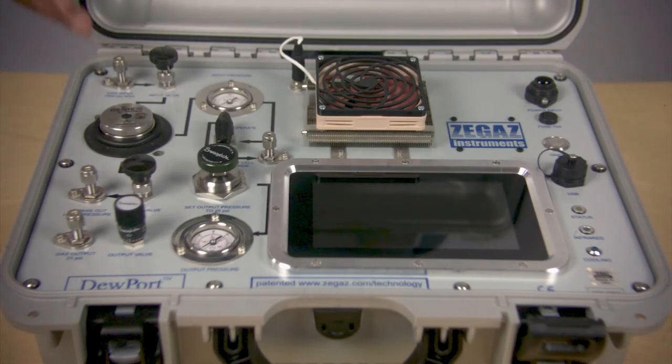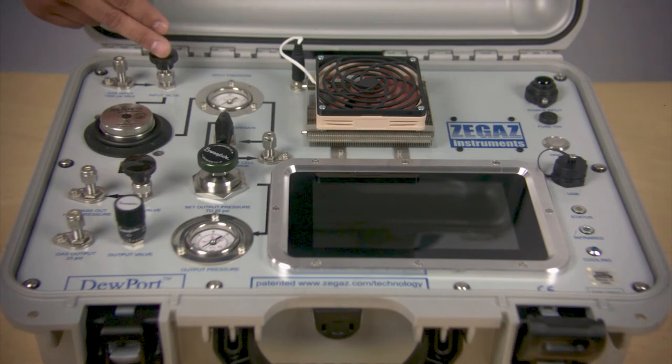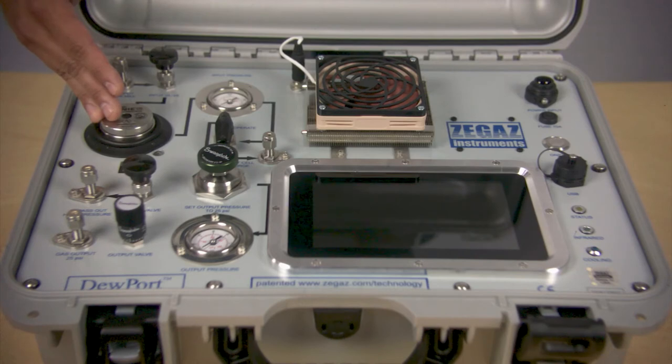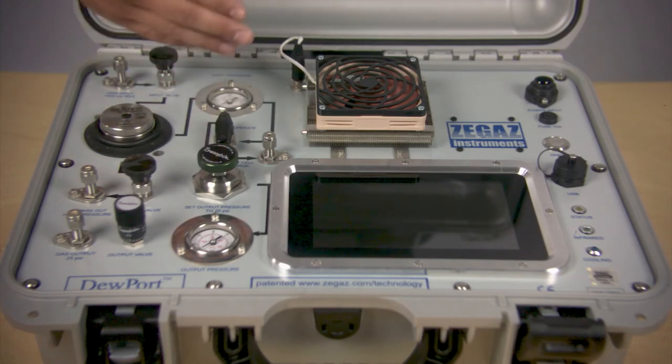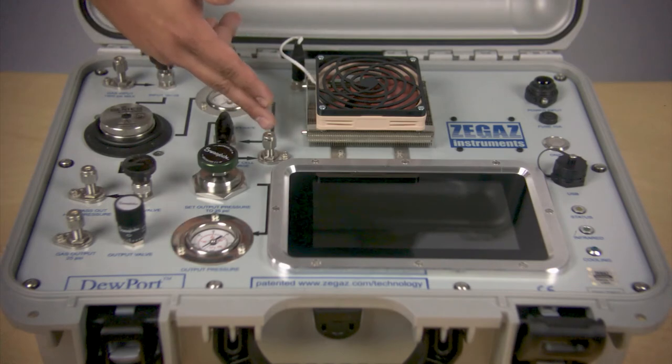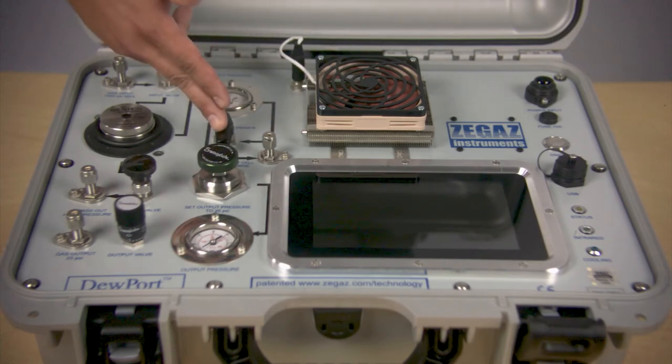We have our gas input port and valve to introduce gas into the unit. The sample will pass through a liquid block membrane filter and pressure will be indicated on the input pressure gauge. It will then flow into the analytical cell which has a purge function controlled by the operate purge valve. We will go into more detail on this feature in the maintenance section.